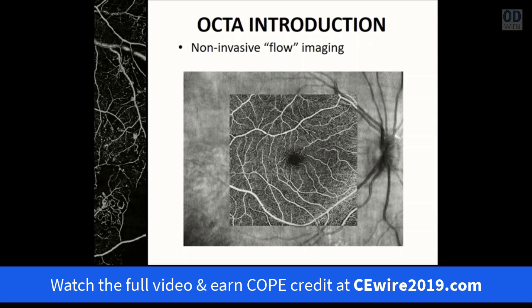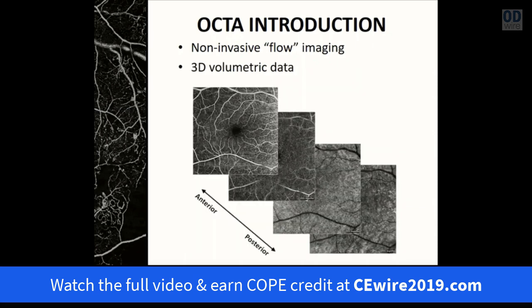OCT angiography is flow imaging — it is not a true form of angiography. Because there's no dye injection, we're not watching dye traverse over time; instead, we're visualizing a snapshot of how fast red blood cells are traveling in a vessel lumen at the moment the scan was taken. This yields a volumetric cube of data that allows us to segment and isolate particular capillary systems: the superficial and deep capillary plexuses, the chorocapillaris, and the choroid.